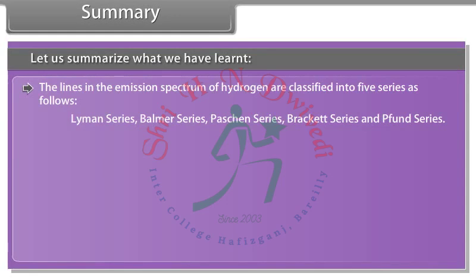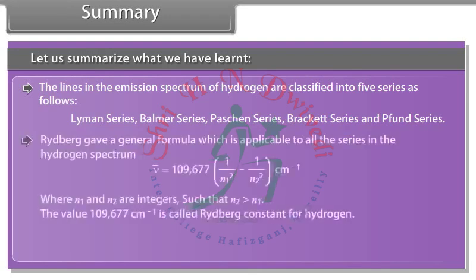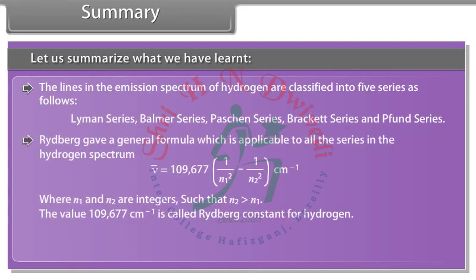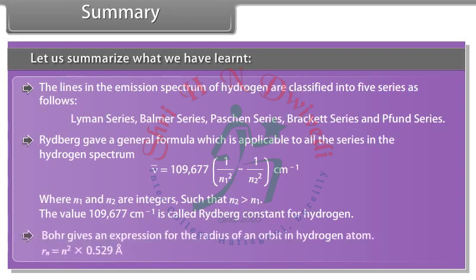Rydberg gave a general formula applicable to all series in the hydrogen spectrum. The value 109,677 per centimetre is called the Rydberg constant for hydrogen. Bohr gives an expression for the radius of an orbit in hydrogen atom: Rn = n² × 0.529 angstrom.